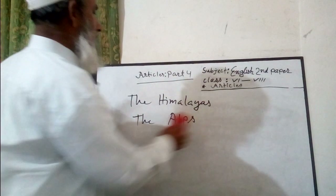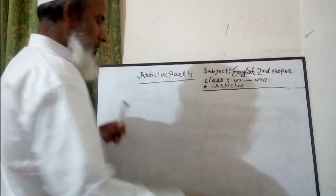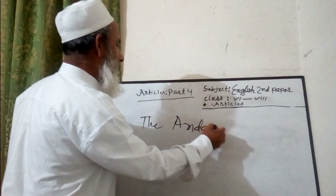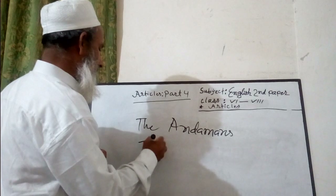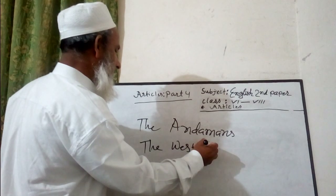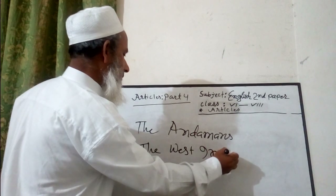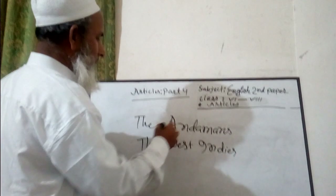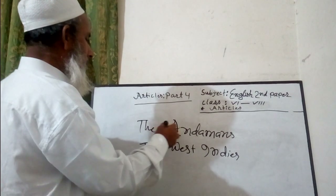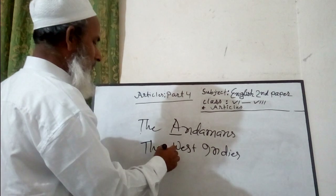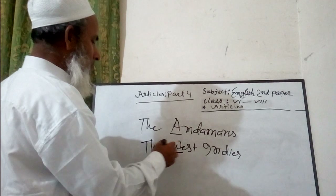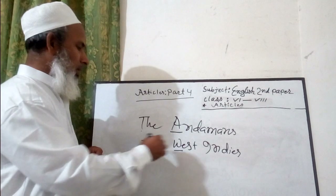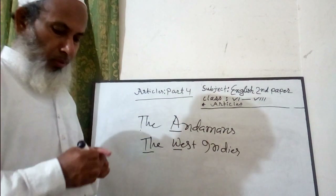We also use 'the' before the names of groups of islands — for example, the Andamans and the West Indies. An important thing: 'the' is pronounced 'thee' before vowels, so we say 'thee Andamans'. Before a consonant, the pronunciation is 'the', so we say 'the West Indies'. These are examples of groups of islands.